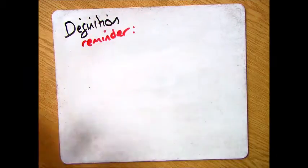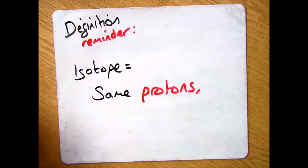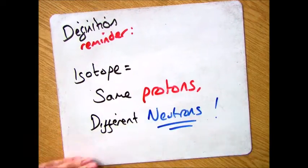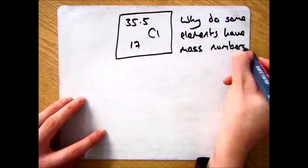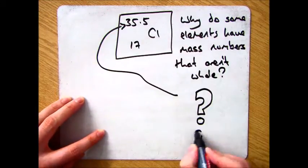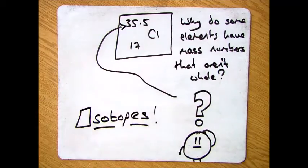So we've already established that an isotope is something that has the same number of protons and a different number of neutrons. What we aren't sure about is why on the periodic table some elements don't have whole numbers, and that's all down to isotopes.